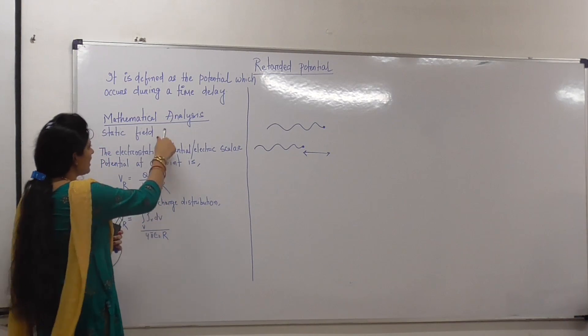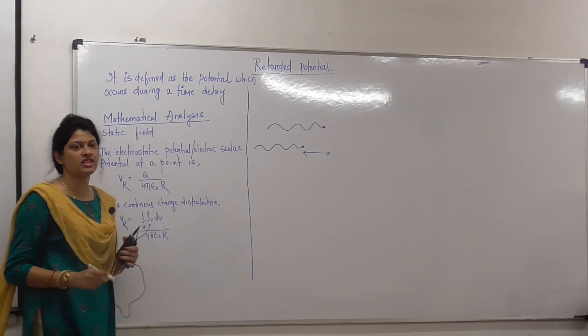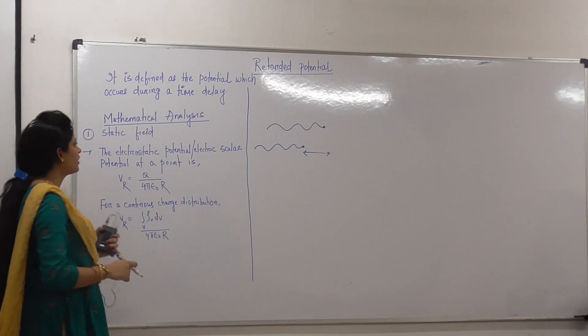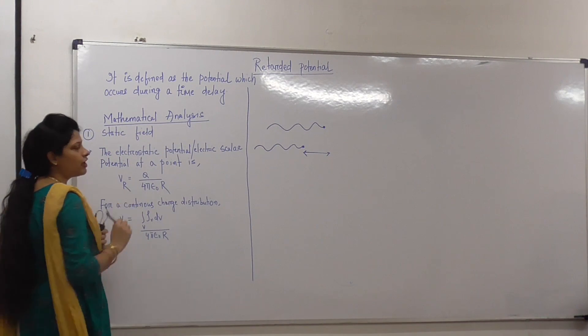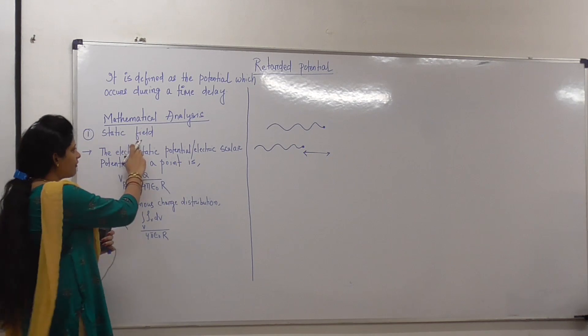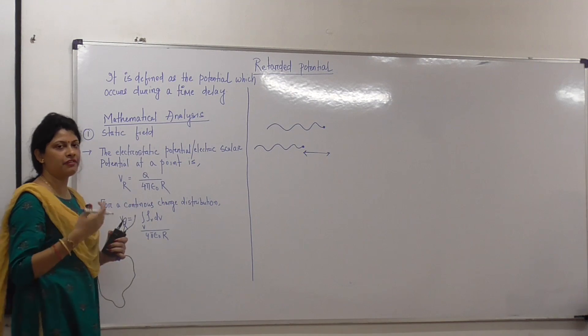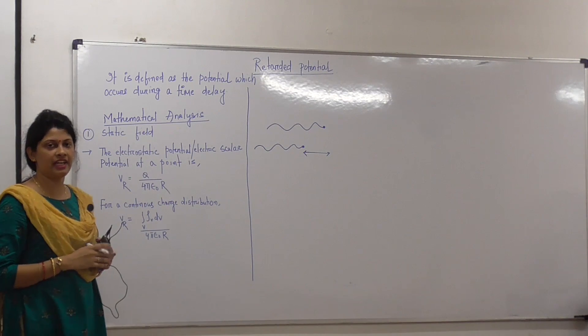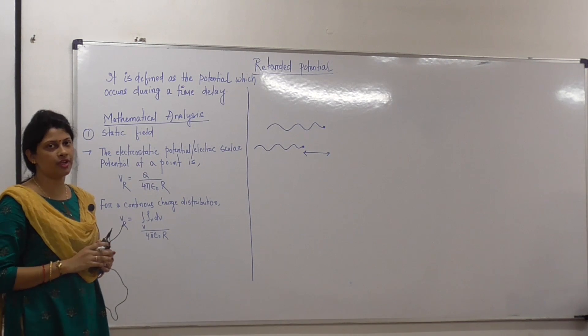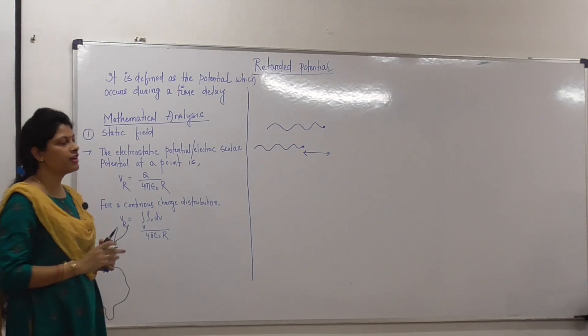Now coming to the mathematical analysis for the Retarded Potential. First of all, we are going to take the static field, then we are going to take the time varying field. So two cases we are going to consider: first one is the static field.